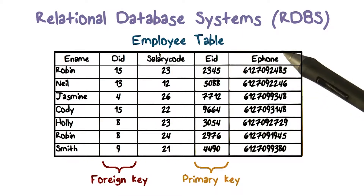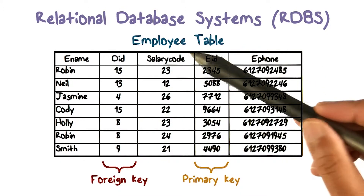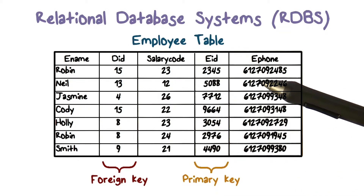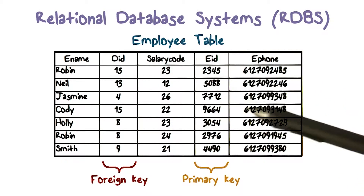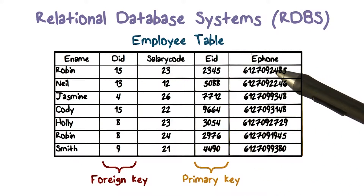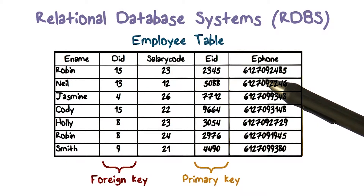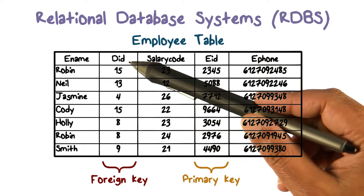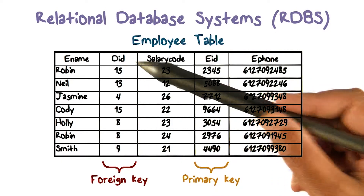We're going to look at an example of a relation or table. The name of this relation or table is 'employee' because it stores information about employees in a certain company. The columns, or the attribute schema, are defined as follows: you have an employee name, and an identifier for the department in which they work — that's the department ID.